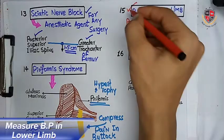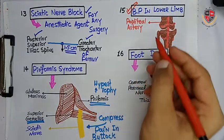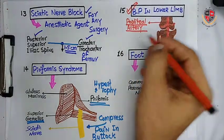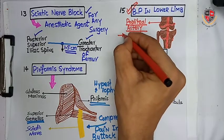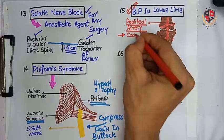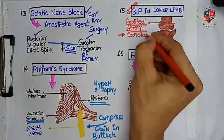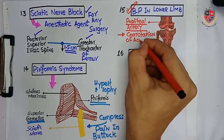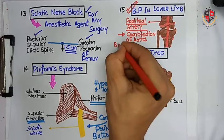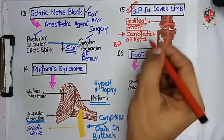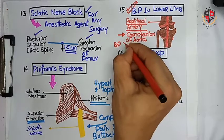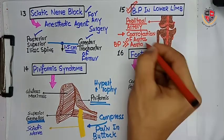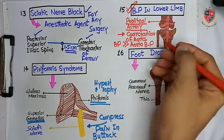The next clinical is how to check blood pressure in the lower limb. The popliteal artery is used to check blood pressure in the lower limb. In a condition where coarctation of the aorta occurs, the blood pressure of the brachial artery is greater than that of the popliteal artery.